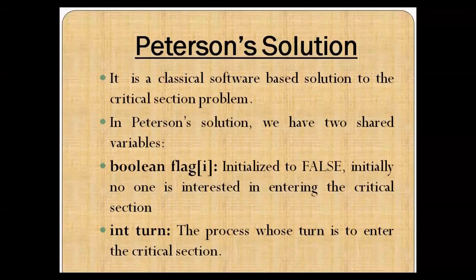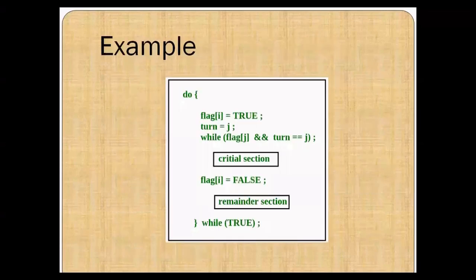The next topic is Peterson's solution. It is a classical software-based solution to the critical section problem. In Peterson's solution, we have two shared variables. The first is a boolean type flag array, which we initially set to false — meaning initially no process is interested in entering the critical section. The second is an integer type turn variable, which indicates which process's turn it is to enter into the critical section.